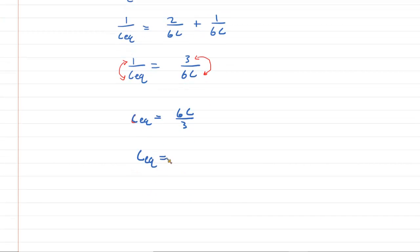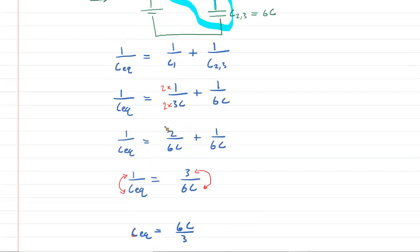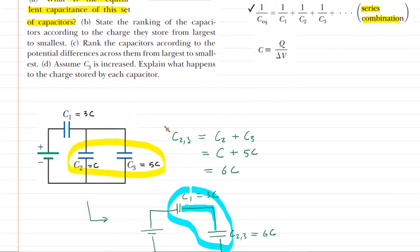In summary, the equivalent capacitance of all three capacitors is equal to 2C. This is the correct answer to part A. Let's go back and see what part B wants of us.